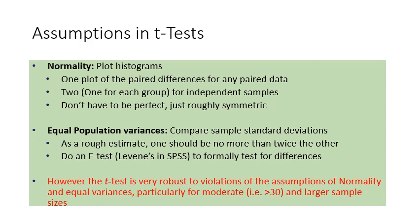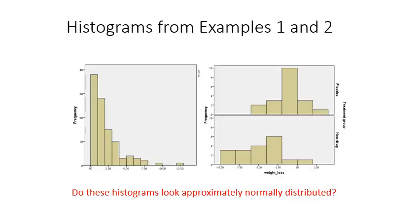The t-test is very robust to violations of the assumptions of normality and equal variances, particularly for moderate (greater than 30) and larger sample sizes. Looking at histograms, the histogram on the left indicates a problem — it is skewed with a longer right tail — but those on the right are approximately normally distributed.